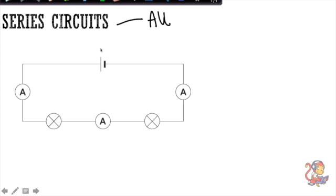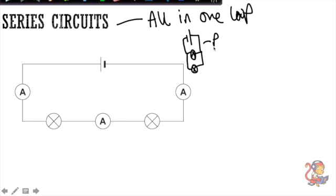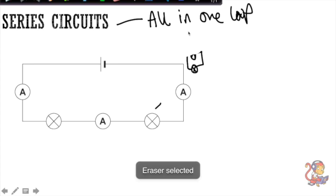When I talk about components I just mean like the cells and the lamps or diodes or resistors or whatever you have in your circuit, they are all in one loop. That is opposed to parallel circuits where you would see branches coming off with different components in different branches. So this one would be parallel and when they are just in one loop that would be in series and we say all the components are in series with each other.